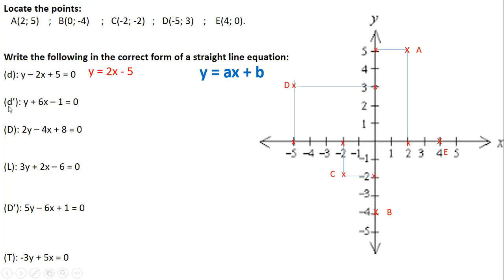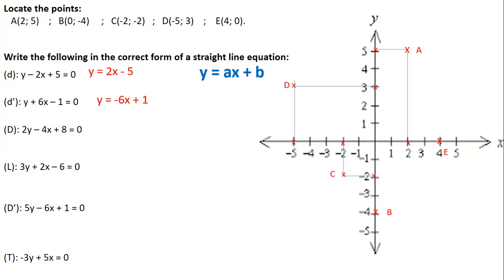For line D prime: y plus 6x minus 1 equals 0. Mahdi correctly converted it to y equals minus 6x plus 1. Here we have y, and the coefficient of x is minus 6. So the slope of this straight line is minus 6. Well done, Mahdi.